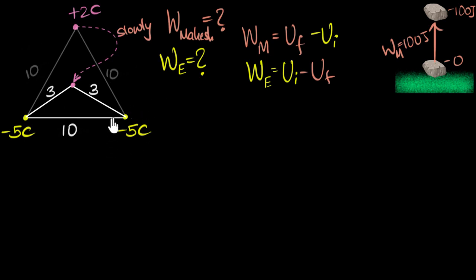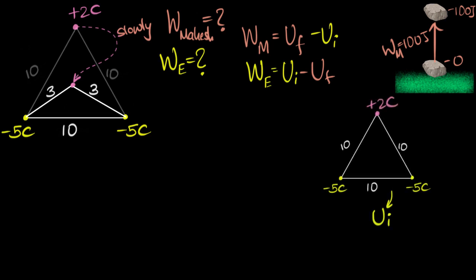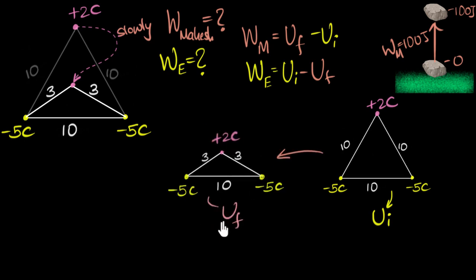So all I have to do now is think about what was the initial potential energy of the system and what is the final potential energy of the system, and then we can figure out the work done. I encourage you to pause this video and try it yourself. One thing you may be curious about is what about the path taken — doesn't that matter? No, it doesn't. Because electric fields are what we call conservative fields. It doesn't matter what path you take. All that matters is the initial state and the final state. The work done is path independent.